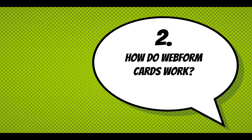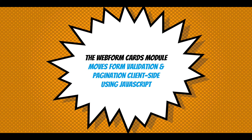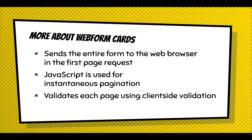How do Webform Cards work? The Webform Cards module moves form validation and pagination client-side using JavaScript. It sends the entire form to the web browser in the first page request. Once someone gets to this multi-step cards form, they get the entire form and it's stored in the browser's memory. JavaScript is used for instantaneous pagination, so when you click back and next, it's not going to the server — it's rendering what's already there. And with each page, as you move, it will validate the data using client-side validation.